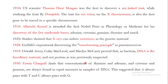In 1950, Erwin Chargaff found that the concentrations of thymine and adenine, and of cytosine and guanine, are always found in equal amounts in samples of DNA. This suggested that A always pairs with T and C always pairs with G, because the equal concentrations of thymine/adenine and guanine/cytosine indicate they are pairing with each other.